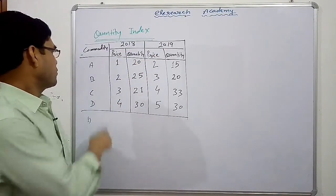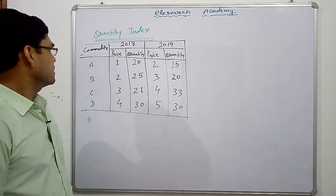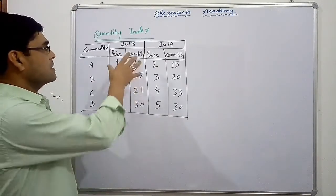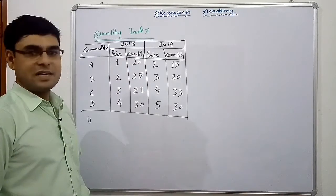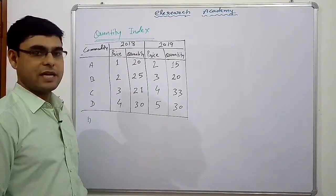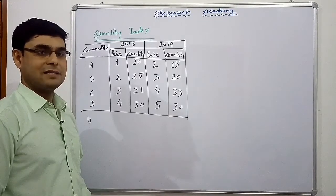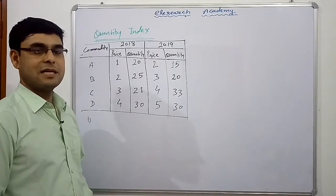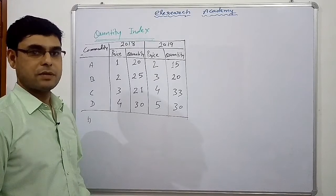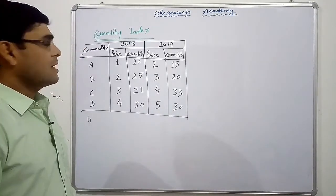We have quantities A, B, C, D — four commodities. And we have to calculate a quantity index. This quantity index we can calculate by all the methods that are given for the price index number. So friends, let's start.